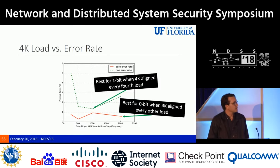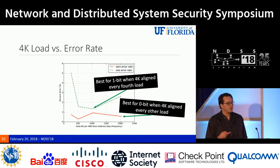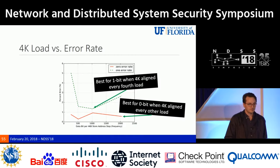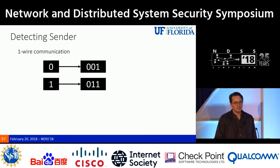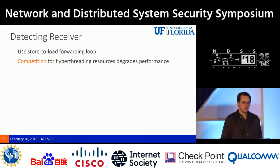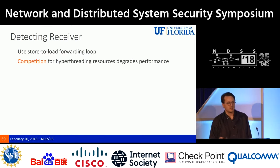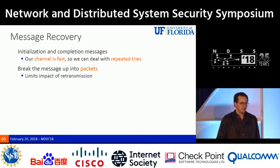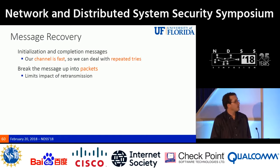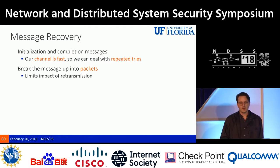For our covert channel protocol we use a one-wire communication protocol, prepending a zero and a one to the header and footer of every bit transmitted, allowing automatic sender detection. To detect the receiver we use a tight store-to-load forwarding loop — the insight being that competition for hyper-threading resources degrades performance of that loop. For message recovery we use initialization and completion messages; since the channel is fast we can handle repeated tries, and we break messages into packets to limit retransmission impact.